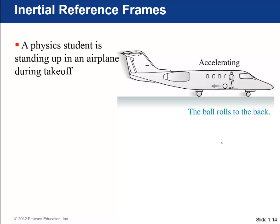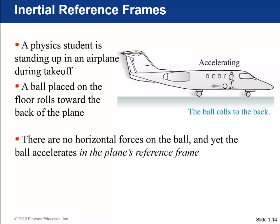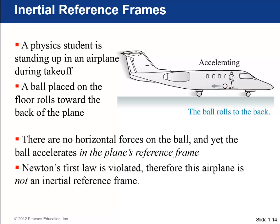However, a physics student, for some reason, is standing up in an airplane that is accelerating during takeoff. We all know that if you're accelerating, the whole plane's accelerating towards the right, you look at that ball, it's going to roll towards the back of the airplane, and it's going to accelerate. This is a case where there's no net force on the ball and yet it's accelerating towards the back of the plane. So that's Newton's first law is violated there. We would say that the airplane is not an inertial reference frame, and that's because the airplane is accelerating.